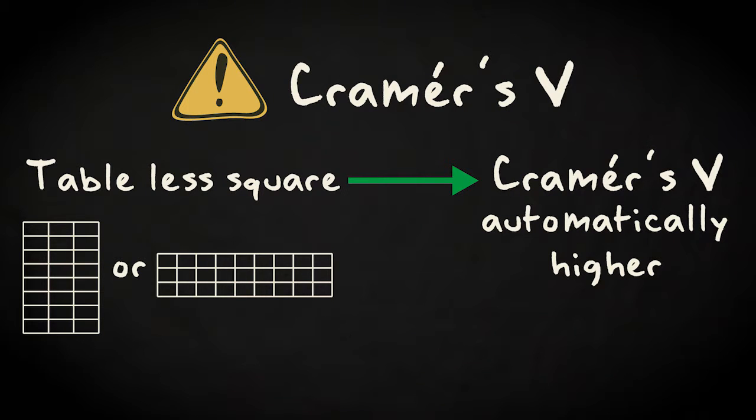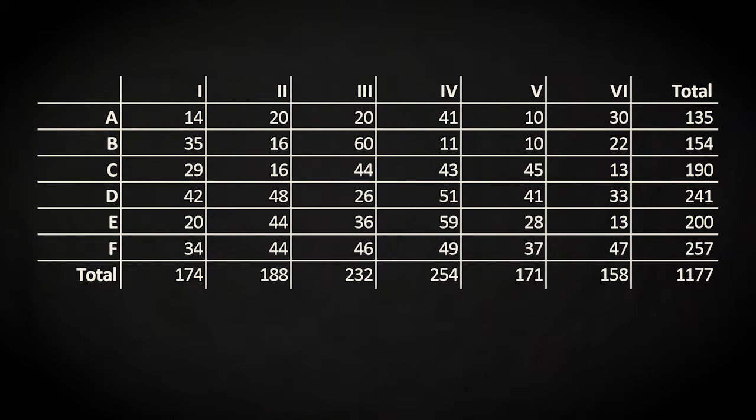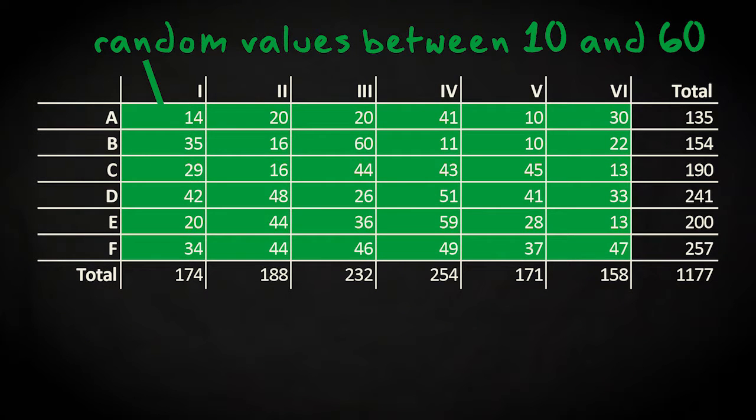I will illustrate this point. Let us consider this cross table of 6 rows by 6 columns which are totally unrelated. The values are randomly generated integers from the range of 10 to 60. For this table, Cramer's V has a value of 0.18.